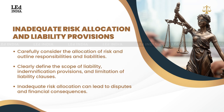Inadequate Risk Allocation and Liability Provisions. Ineffective risk allocation and inadequate liability provisions can create significant pitfalls in contract drafting. Parties must carefully consider the allocation of risk and outline the respective responsibilities and liabilities of each party. Clearly define the scope of liability, indemnification provisions, limitation of liability clauses, and any insurance requirements. Failing to adequately address risk allocation can lead to disputes and financial consequences. By properly allocating risk and outlining liability provisions, parties can protect themselves and mitigate potential losses.